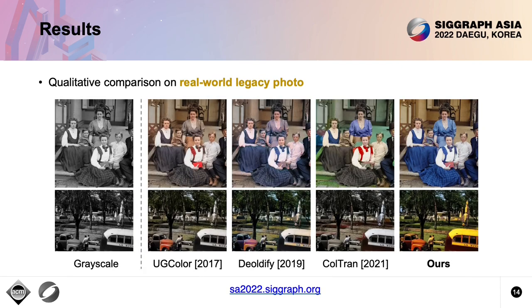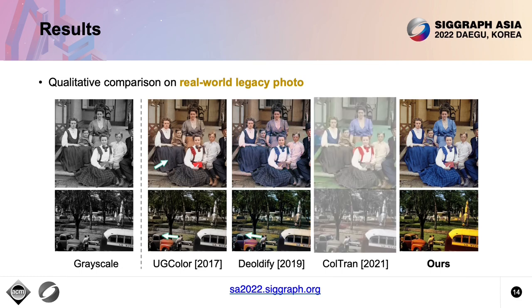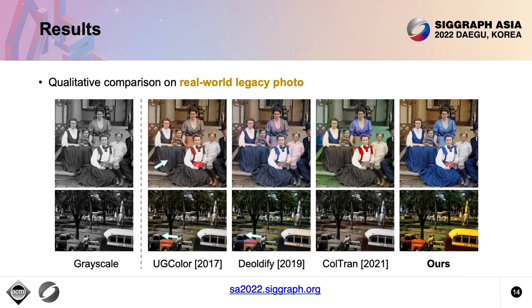Here are colorized results of real-world legacy grayscale photos. The two regression-based methods induce artifacts like desaturated effects and inconsistent colors. The autoregressive model-based method, Coltrane, achieved relatively colorful results, but the performance is unstable and some regions even fail to be colorized. Notably, only our method generated visually plausible results.